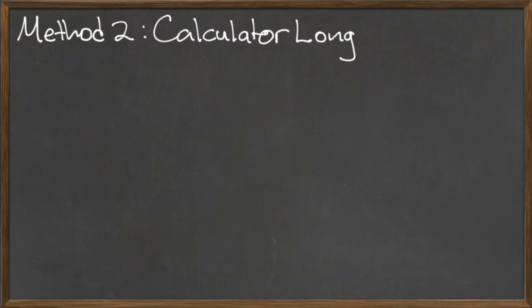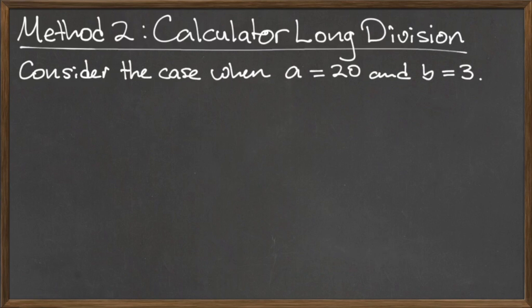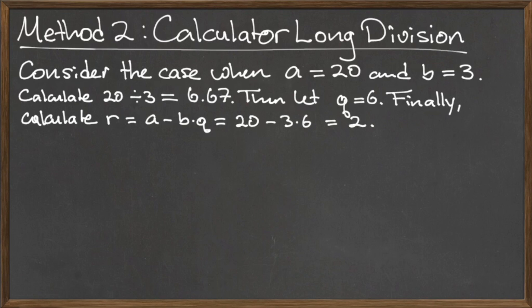The second method to calculate a mod b is long division, which we demonstrated in a previous video. Let's examine the same numbers, a equals 20 and b equals 3, to show that a mod b is the same using these two methods. If we input 20 divided by 3 into a calculator, we get 6.67. We only want the integer part of this answer, so we ignore the decimal point and all numbers to the right of it to get the quotient 6. To find the remainder, we subtract 3 times 6 from 20 to get 2. Since the remainder and a mod b are the same, we've confirmed using long division that 20 mod 3 is equal to 2.